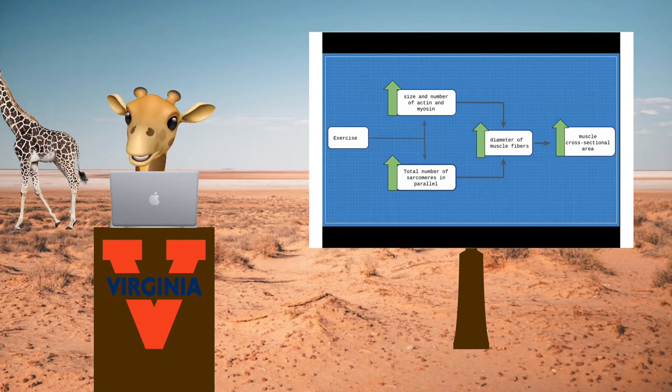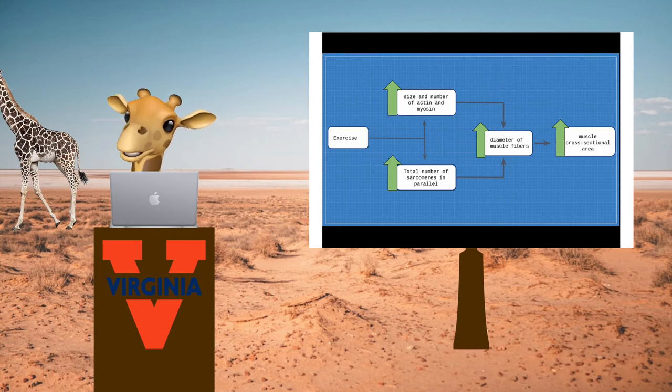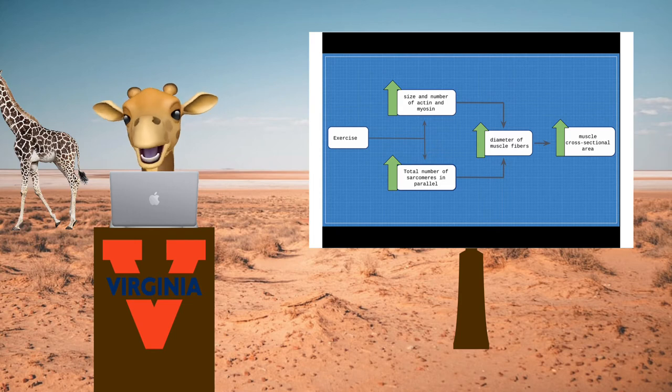This, therefore, increases the diameter of the muscle fiber, which increases the muscle cross-sectional area, also known as hypertrophy.